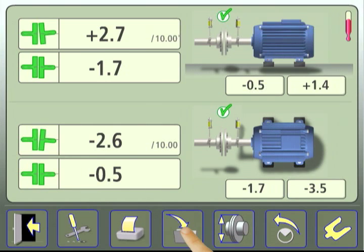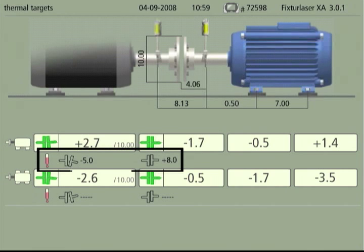If the alignment results are saved to a file, the thermal adjustments will be noted on the results file JPEG image.